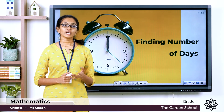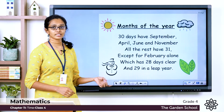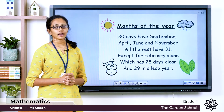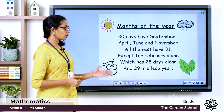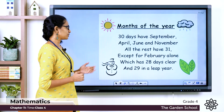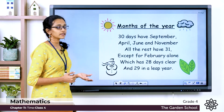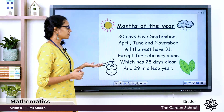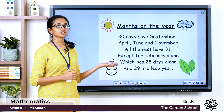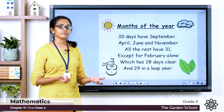It will be easy for you to find out the number of days in each month if you can memorize this small rhyme. It goes: 30 days have September, April, June and November. All the rest have 31, except for February alone, which has 28 days clear and 29 in leap year.